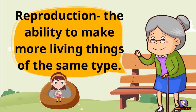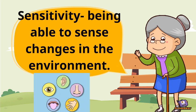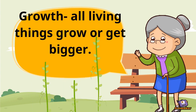R is for reproduction, which is the ability for living things to make more living things of the same type. S is for sensitivity, which is being able to sense changes in its environment. G is for growth — all living things grow or get bigger.